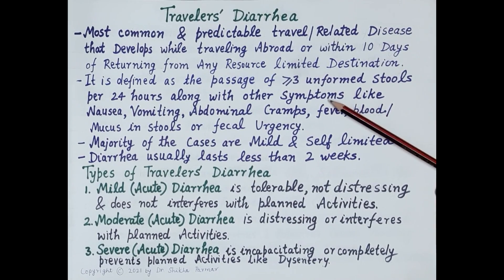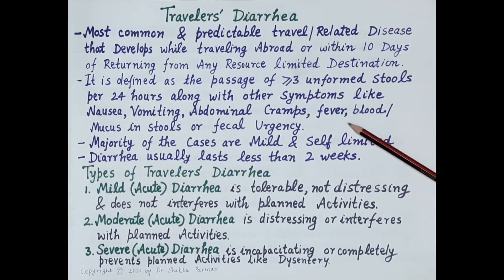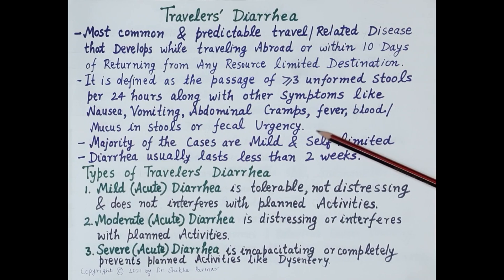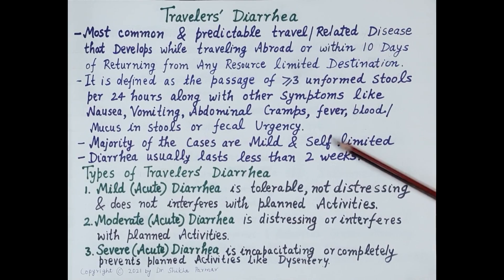— that is, loose watery stools — per 24 hours, along with other symptoms like nausea, vomiting, and abdominal cramps. Symptoms like fever, blood or mucus in the stools, and fecal urgency are observed in severe travelers' diarrhea, such as dysentery, where there is intestinal inflammation especially in the colon.